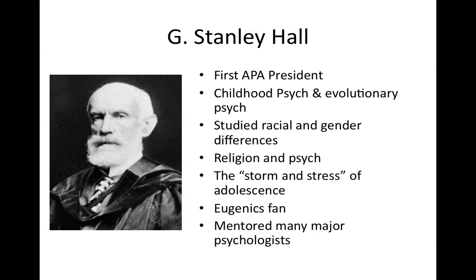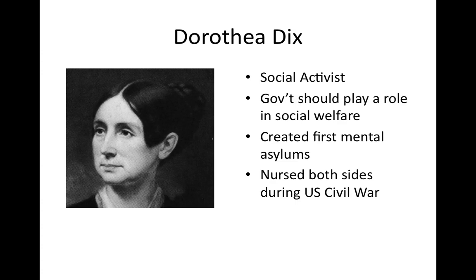G. Stanley Hall was the first APA president — that's the American Psychological Association. He studied childhood psychology and evolutionary psychology, and also studied racial and gender differences as well as religion in psychology. He talked about the 'storm and stress' of adolescence, was a eugenics fan, and mentored many other psychologists.